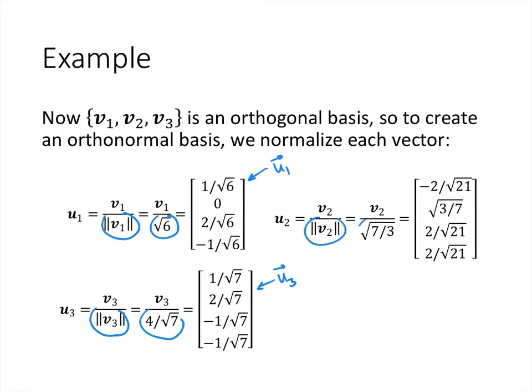And then v2, the length of v2 is the square root of 7 over 3, and again when we divide and do a little bit of simplification, we get u2. So u1, u2, and u3 is an orthonormal basis. It's essentially the same three vectors we found before, but we've shrunk or expanded them as necessary to turn them into unit vectors.